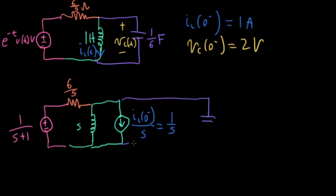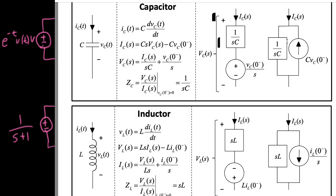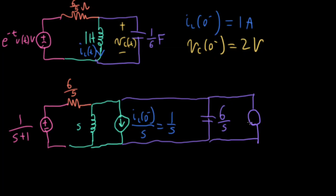For the capacitor model, I'll have 1 over SC, which is 6/S. For the current source in parallel with that, the current arrow runs in the opposite direction, and I have the capacitance times the pre-initial voltage. The capacitance is 1/6, the initial voltage is 2, so this whole thing equals 1/3.